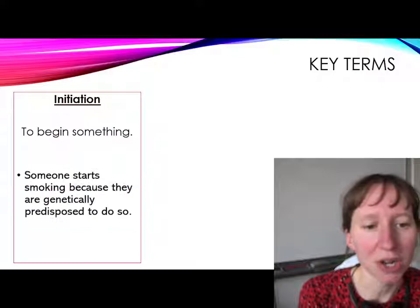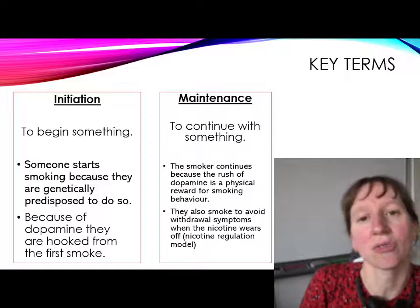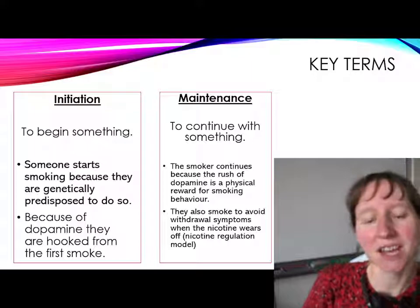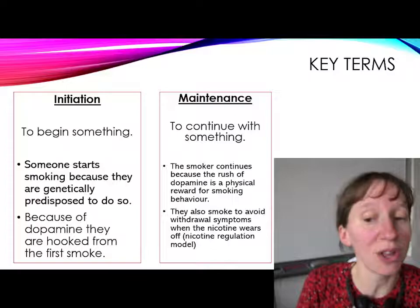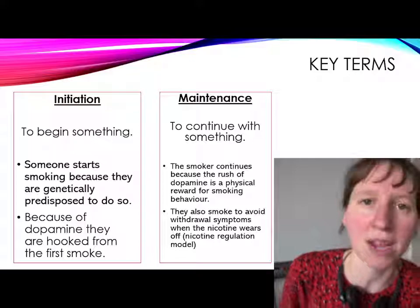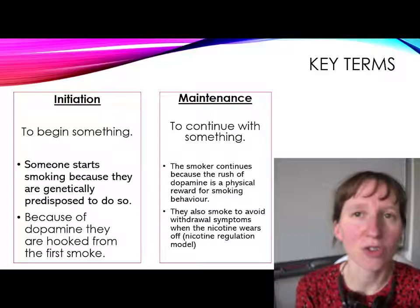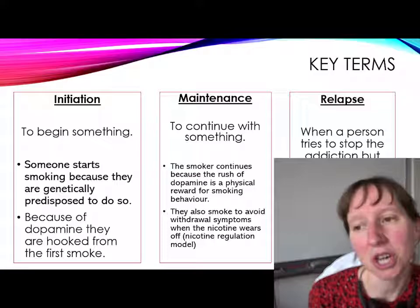So to summarise maintenance: the first point is that the rush of dopamine acts as a reward, making someone more likely to keep smoking — with the emphasis on the biological side, that those different brain areas all activate and produce a big rush of dopamine. The second part of maintenance is withdrawal symptoms: someone avoids withdrawal symptoms by regulating nicotine levels in their bloodstream.